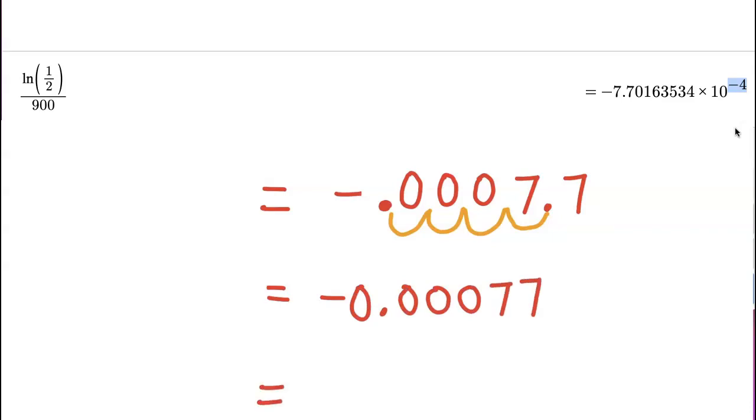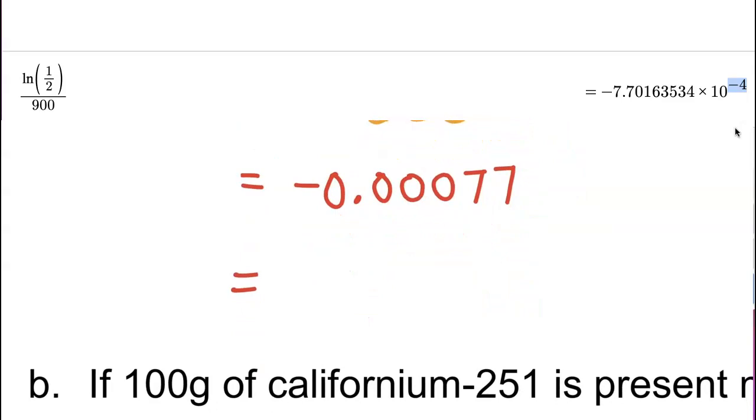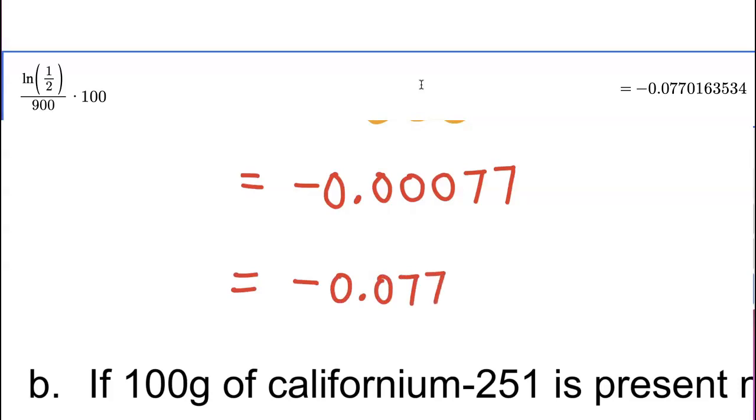If you want to convert this into percent, we can multiply this by 100. I'll circle that as my answer. But when we write the equation for this exponentially decaying substance, we'll be using that decimal negative 0.00077 as the R value.